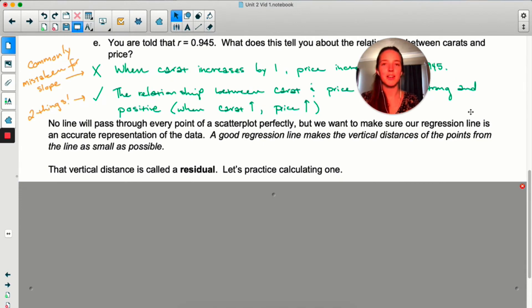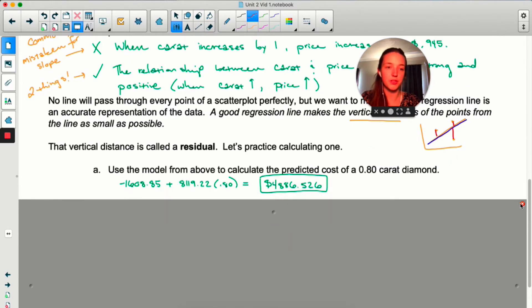Hopefully you were able to finish the rest of this page. It's not going to be possible to have a line that hits every single point exactly, unless the relationship is linear exactly, but usually that isn't the case. A good regression line fits so that most of the data points are really close to the line. This sentence in italics is really important. A good regression line makes the vertical distances of the points from the line as small as possible.